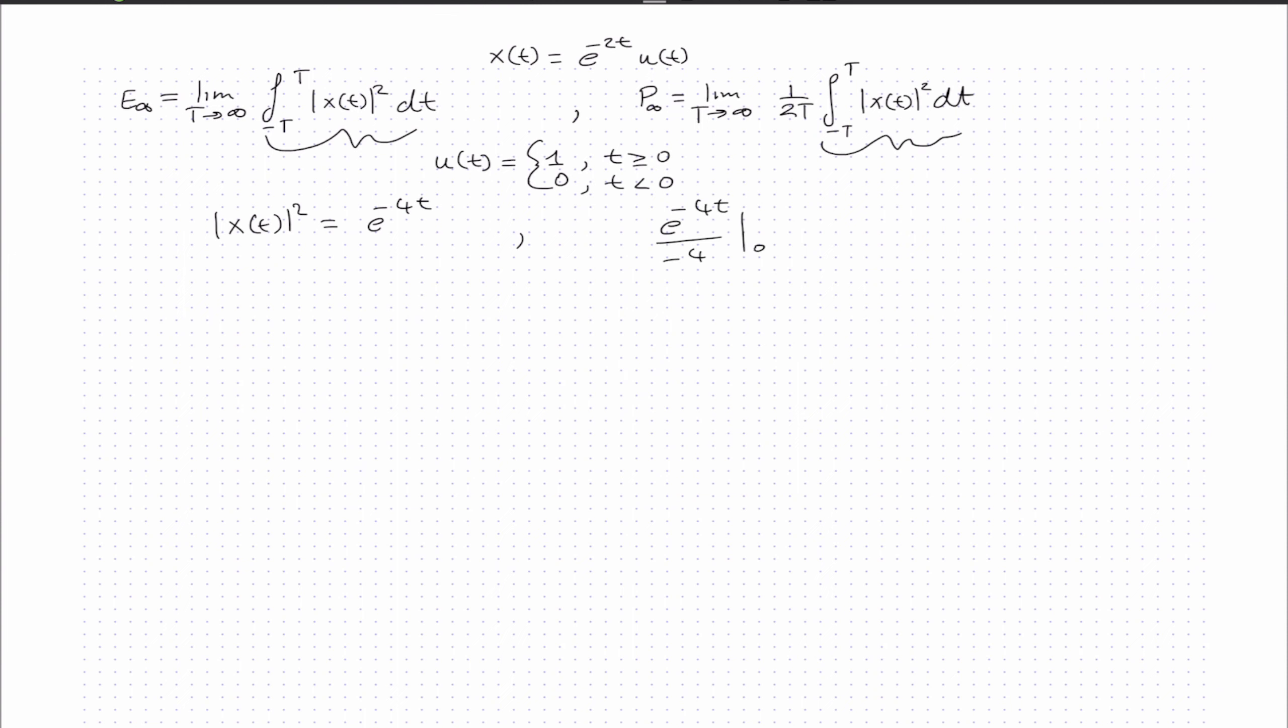The integral is from 0 to infinity because of the unit step signal. The unit step signal looks like this: at 0, it jumps to 1. This is continuous time, so let's use a line at 1, and this continues to infinity.